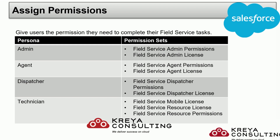Last but not least, our technician. Technicians generally have three permission sets. First is the Service Resource license, and then there is the Field Service Resource permission — this is for them to get selected and scheduled as a resource. The third permission set, which is the mobile license, is assigned to them so that they can log into the Field Service mobile app.